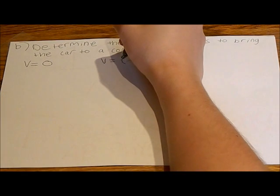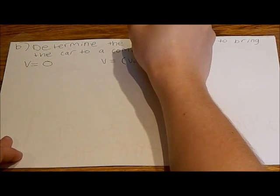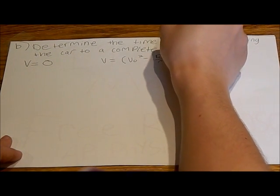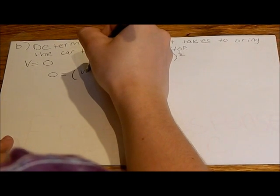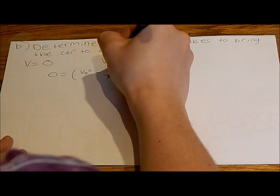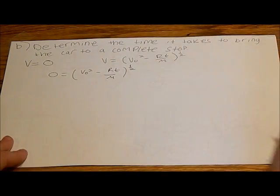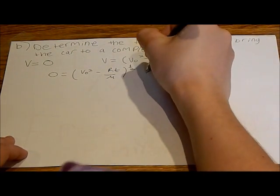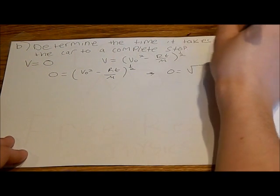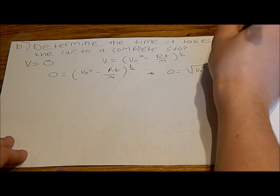Part B says: determine the time it takes to bring the car to a complete stop. This means finding t when v equals zero. We know v equals v-naught squared minus rt over m to the one-half, so we set zero equal to the square root of v-naught squared minus rt over m.